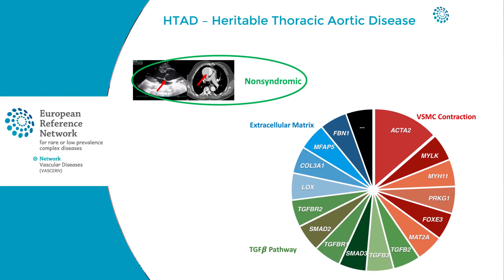By definition, non-syndromic heritable thoracic aortic disease comprises entities without any extra-aortic features. Genes involved in non-syndromic HTAD are found in all genes also identified in the syndromic forms, along with a number of other genes such as PRKG1 and MYLK.